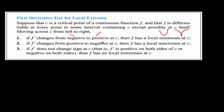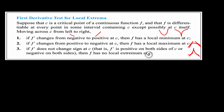If the derivative changes sign from positive to negative at c, then f has a local maximum at x = c. If the derivative does not change sign — it's positive on both sides or negative on both sides — then there's no change of direction, and f has no local extreme value at that point.